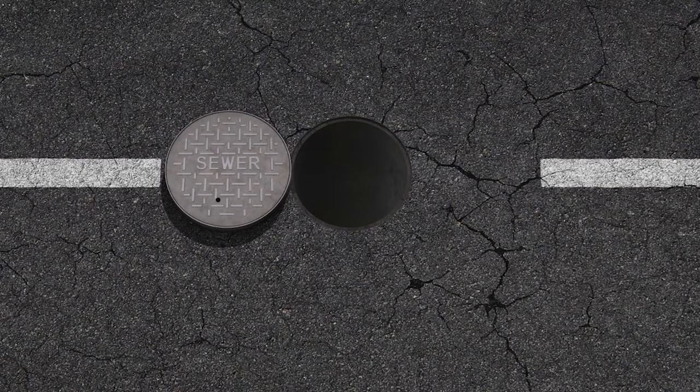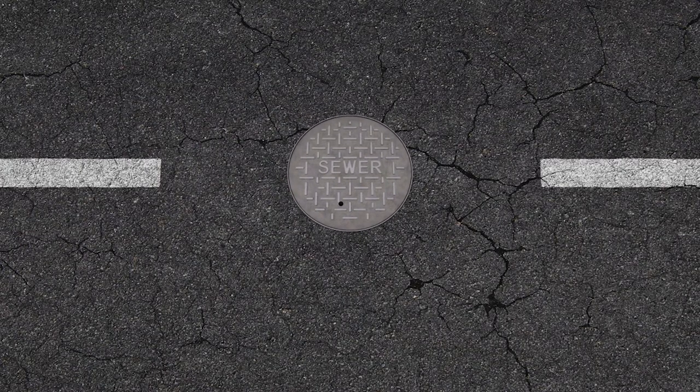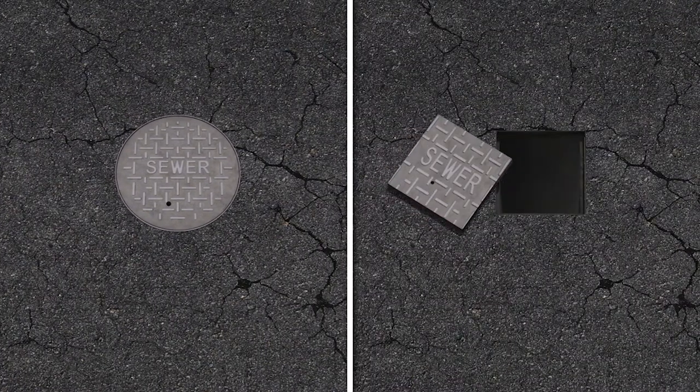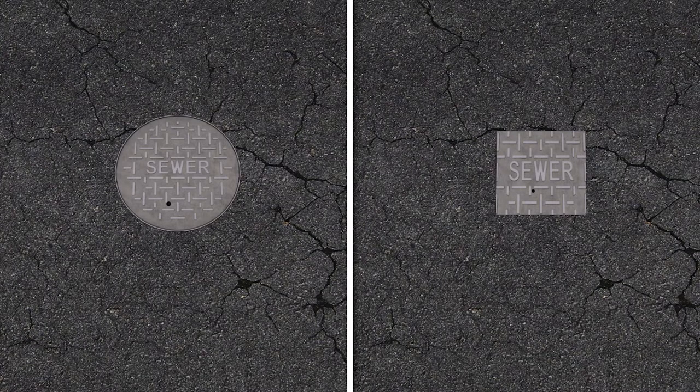Another advantage is that when it comes time to put the manhole cover back into place, a circular cover can easily just slide right in, regardless of the angle. Whereas a square lid would have to be rotated and aligned just right, which can be a bit inconvenient given the average manhole cover weighs hundreds of pounds.